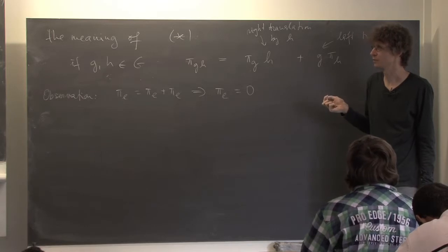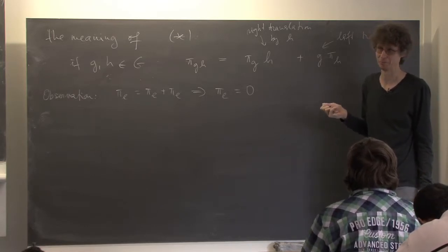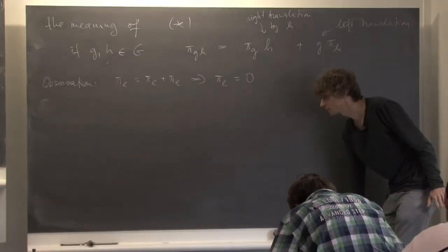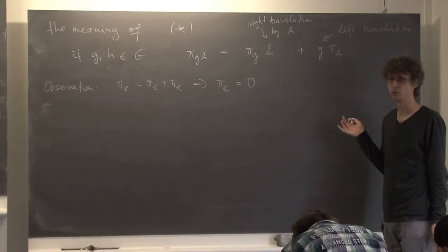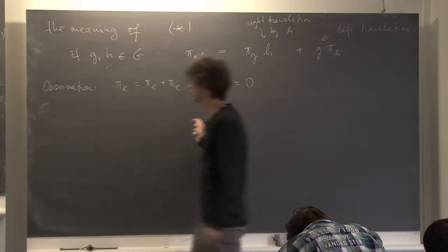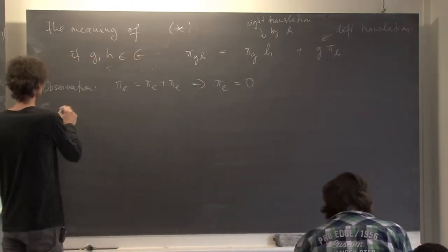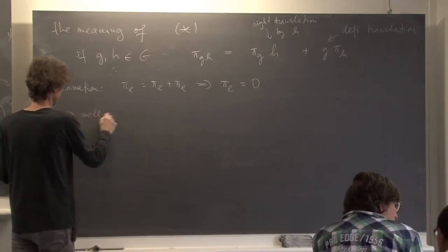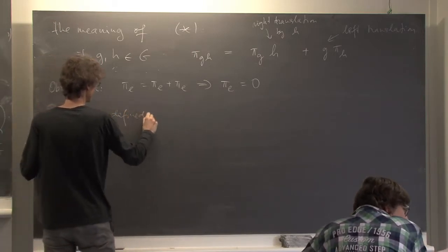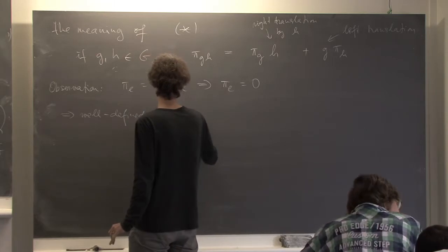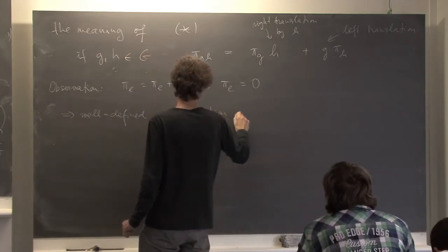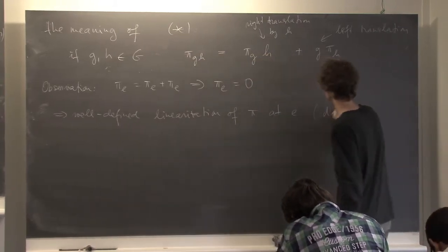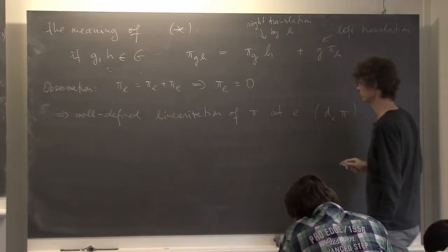A key observation: setting g = h = e (the unit element), we get π_e = π_e + π_e, so π_e = 0. This means a Poisson-Lie group is never symplectic — the bivector vanishes at the identity. In particular, since π vanishes at e, the linearization of π at e is well-defined and gives a Lie bracket on T*_e G = g*.